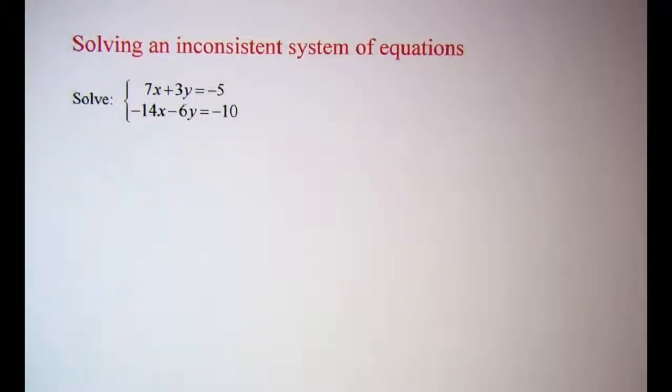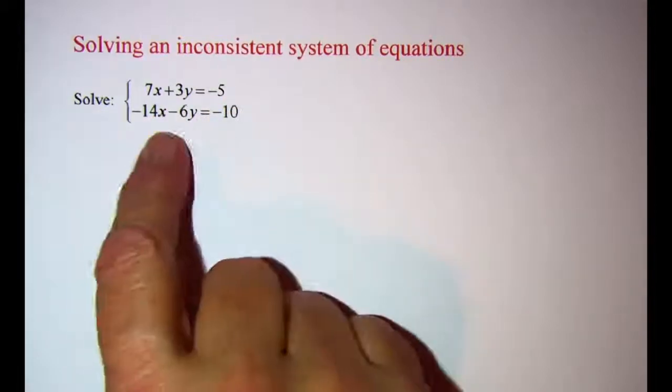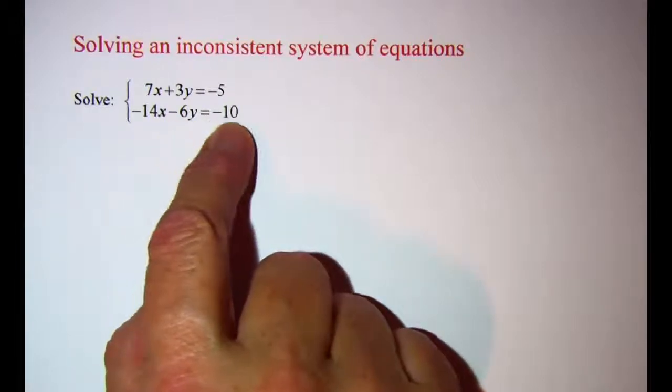In this video we'll be solving an inconsistent system of equations. The system we're going to be working with is 7x plus 3y equals negative 5 and negative 14x minus 6y equals negative 10.